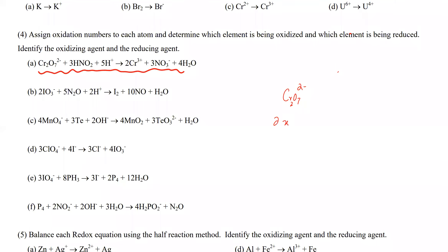There are 2 Cr's. Oxygen is minus 2 and there are 7 of them, and the total charge must equal the entire ion's charge of minus 2. So if you solve for this, 2X equals minus 14 goes to the other side becoming 12, and dividing by 2 gives 6. So Cr over here is plus 6 — that's one of the Cr's, plus 6.